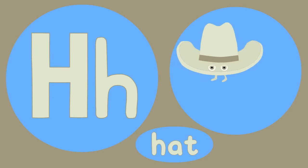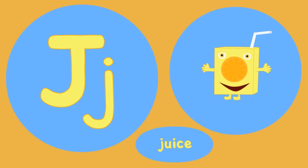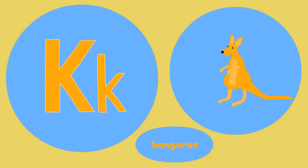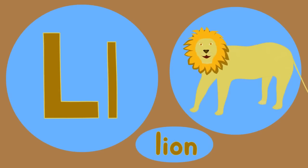I is for igloo, i-i-igloo. J is for juice, j-j-juice. K is for kangaroo, k-k-kangaroo. L is for lion, l-l-lion.